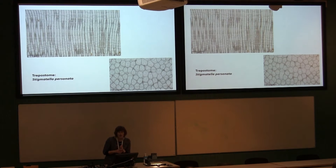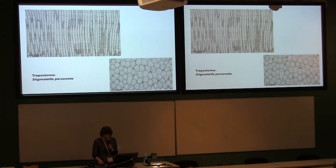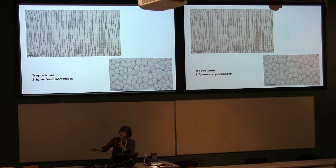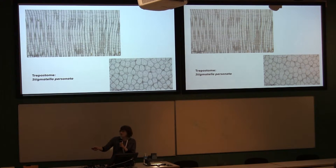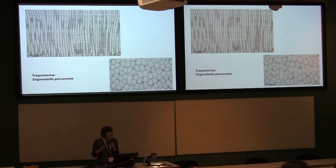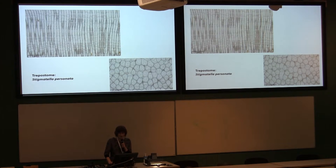First, the taxonomy. When we looked at all these large domic colonies, they were the same form — they were all stigmatella. These are the large zoecia; this is where the feeding tubes would be and you'd have had a polypide at the top. They're very straight and in cross-section they're polygonal. There are no polymorphs and no structural tubes here.